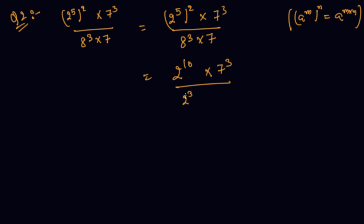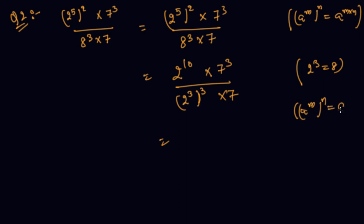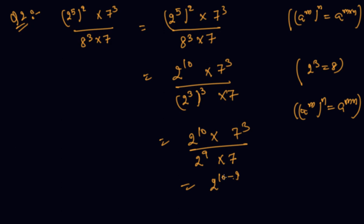If I can express 2 raised to power 8 as 2 raised to power 3 raised to power something — because 2 raised to power 3 is 8 — then this also becomes my case of a raised to power m raised to power n, which is m times n. So 2 raised to power 10 into 7 raised to power 3 upon 2 raised to power 3 into 3 — which is 9 — into 7. So this is 10 minus 9 into 7 raised to power 3 minus 1, using the formula a raised to power m upon a raised to power n equals a raised to power m minus n.